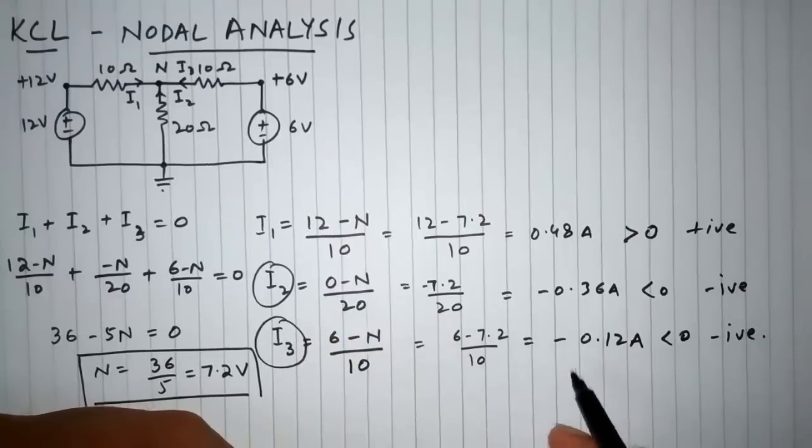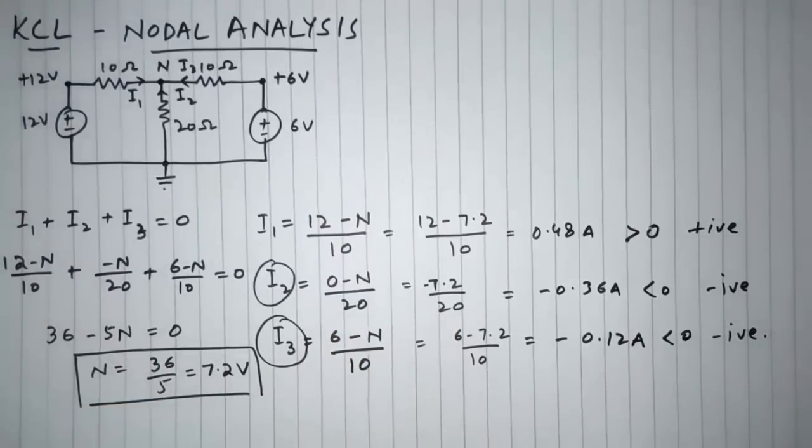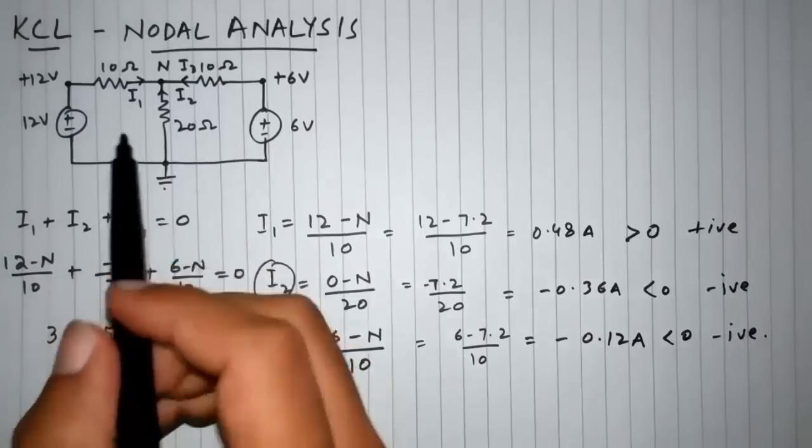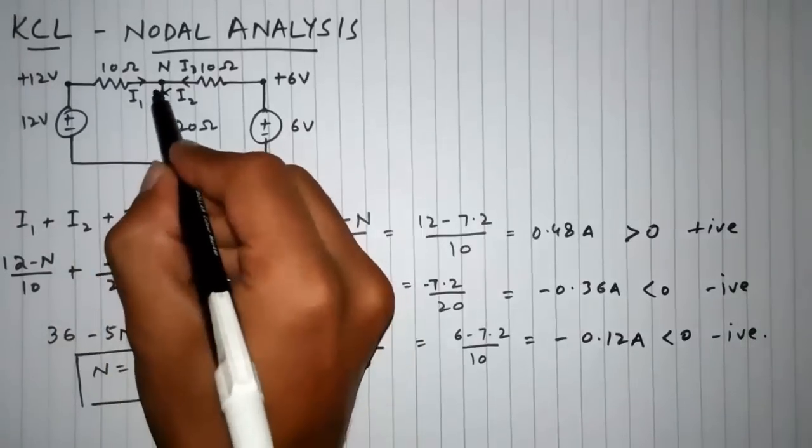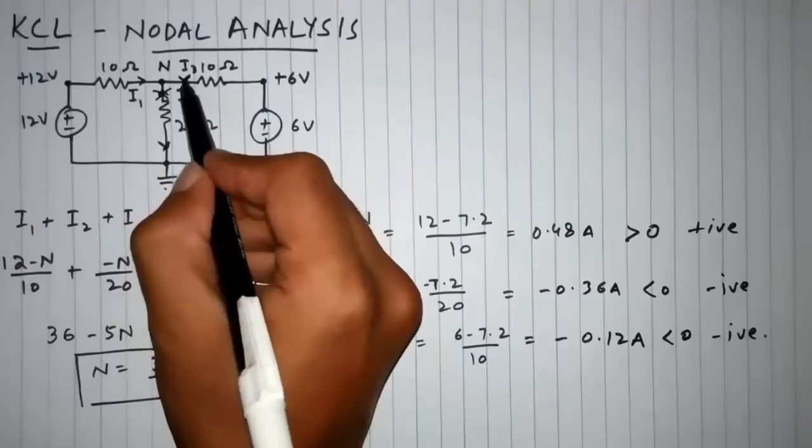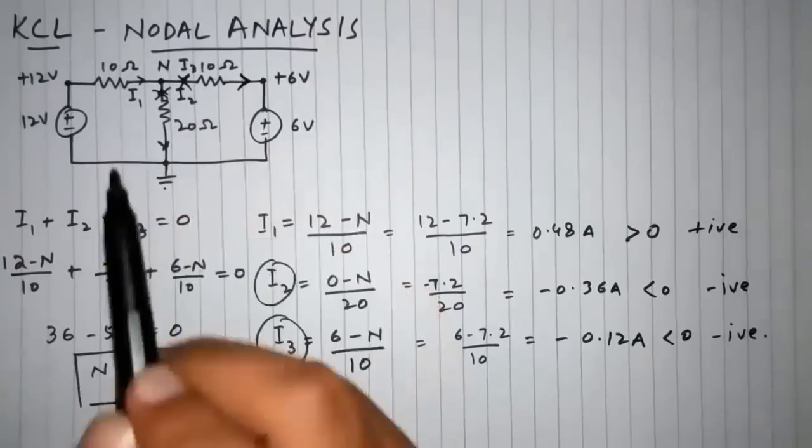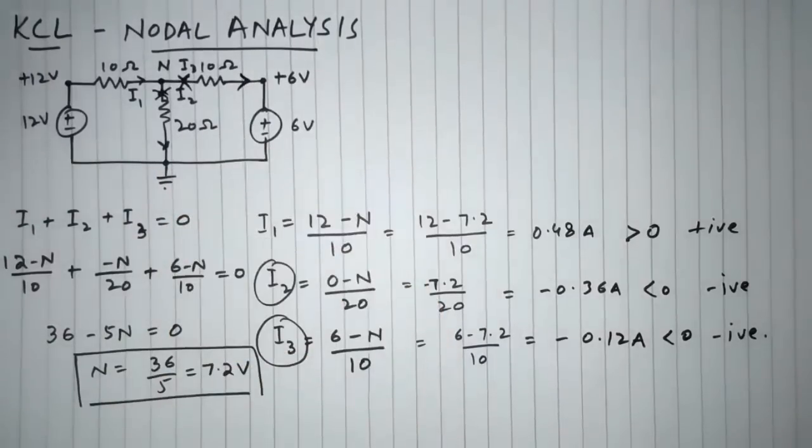Therefore it means that this current, that is I₂, and this current, that is I₃, which have negative values, actually have the direction opposite to what we had initially assumed in our calculation. So the actual direction of I₂ will not be this, instead it will be this. And for I₃, it will not be this, instead it will be flowing in this direction.